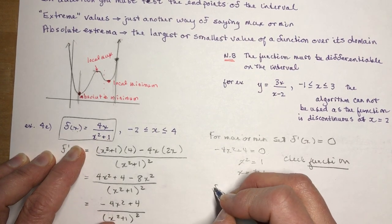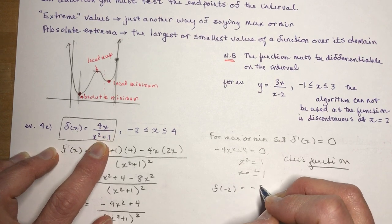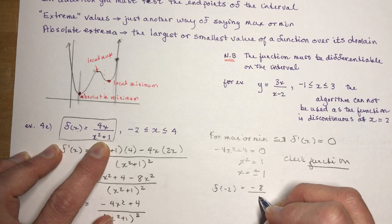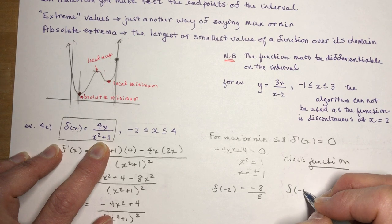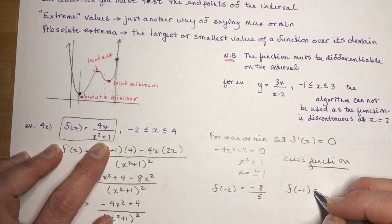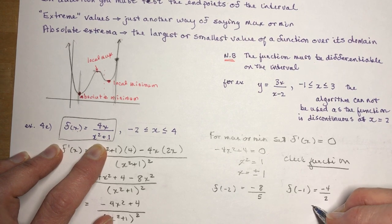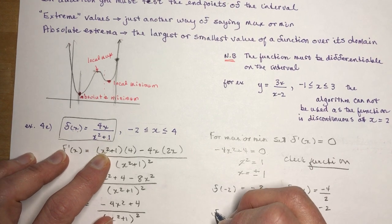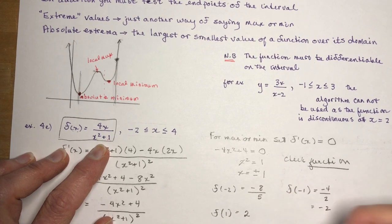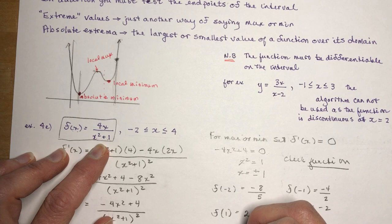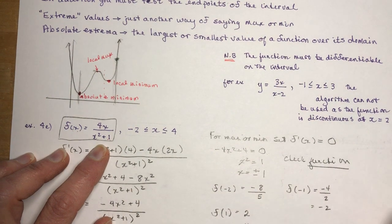So I'm going to find f at minus 2. So let's plug that in. We're going to get negative 8 over negative 2 squared is 4 plus 1 is 5. So that's minus 8 fifths. I'm going to do f at negative 1, which was where I had 0 slope. And that's going to give me minus 4 over 2, or minus 2. I'm going to check f at positive 1. And that's going to give me 4 over 2, which is 2. And I'm going to check f at 4. So f at 4 is going to be 16 over 17.